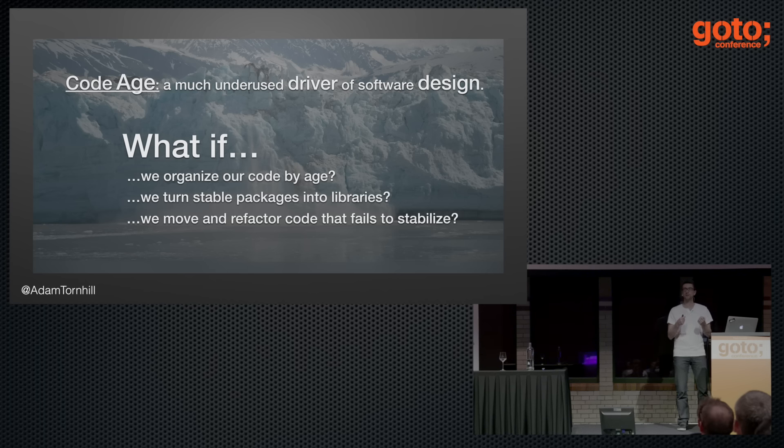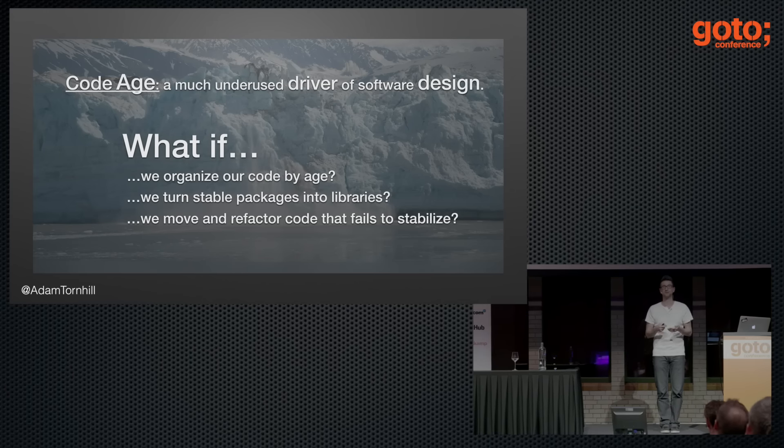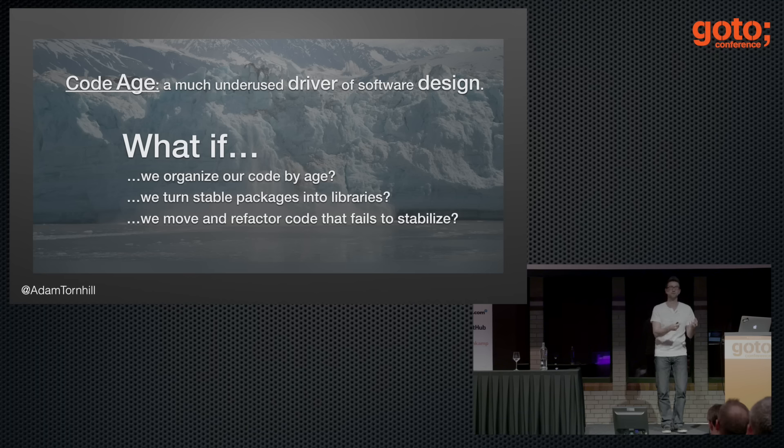To sum up, code age is a much underused driver of design. My recommendations so far: organize code by age, turn stable packages into libraries, and refactor code that we fail to stabilize. Following these recommendations gives us advantages: it helps our long-term memory because we can build stable mental models; we can turn libraries into chunks that fit our head. Since we end up with less code in the codebase, we also get easier onboarding with less cognitive load for new developers. Code age can also help us decide where to write extra tests — and use real data to decide which parts of the test suite are safe to shut down when build times grow too long.